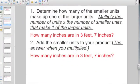So what a mixed measure is, is two different measurements of two different units, like three feet, seven inches. And they're going to ask you to get everything converted into one. So what you want to do is determine how many of the smaller units make up one of the larger units. Multiply the number of units times the number of smaller units that make up the larger one.